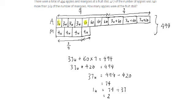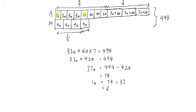The question is asking how many apples were there at the fruit store. I'll first find the number of mangoes. From the model, the mangoes are 16 units, so 16 units equals 2 multiplied by 16, which gives me 32 mangoes.